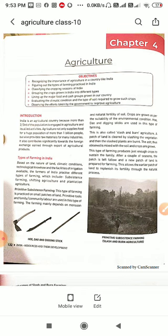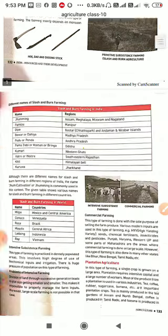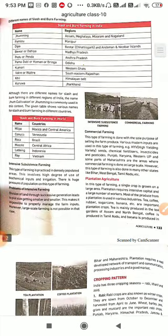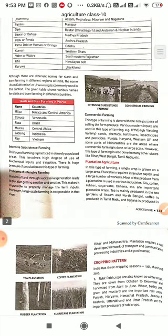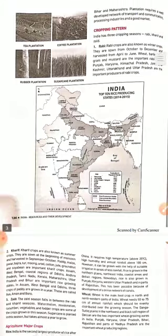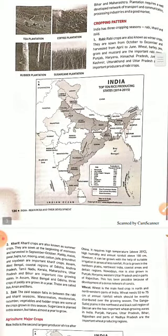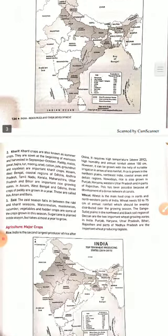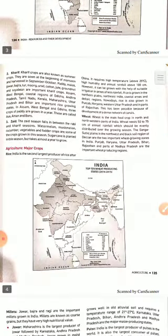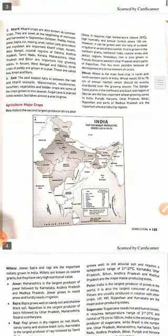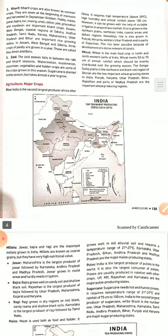In my last video, we understood the types of farming in India — plantation agriculture, cropping patterns — rabi, kharif, and zaid. Now we will start with Agriculture: Major Crops.